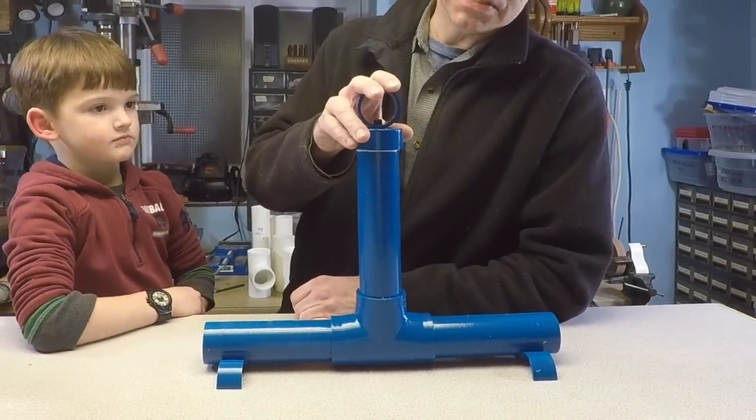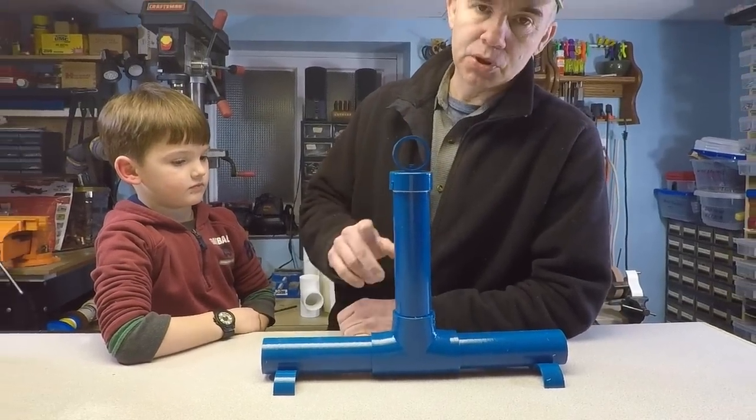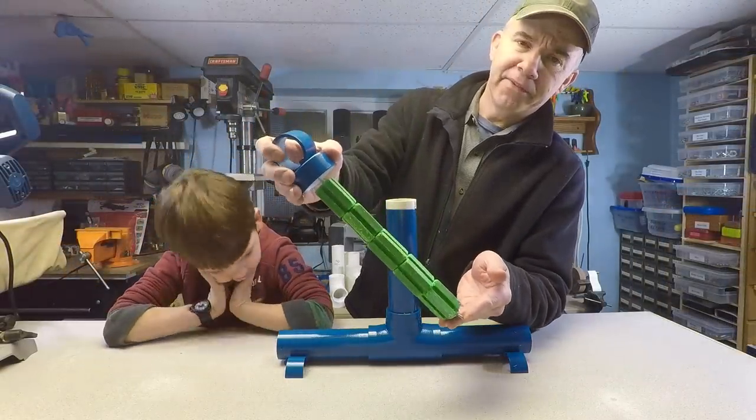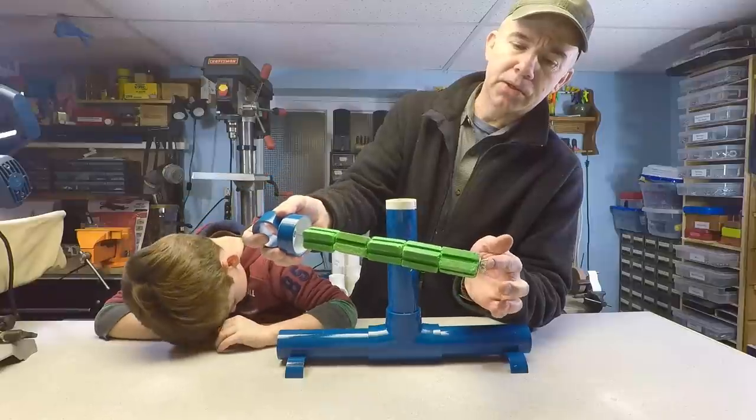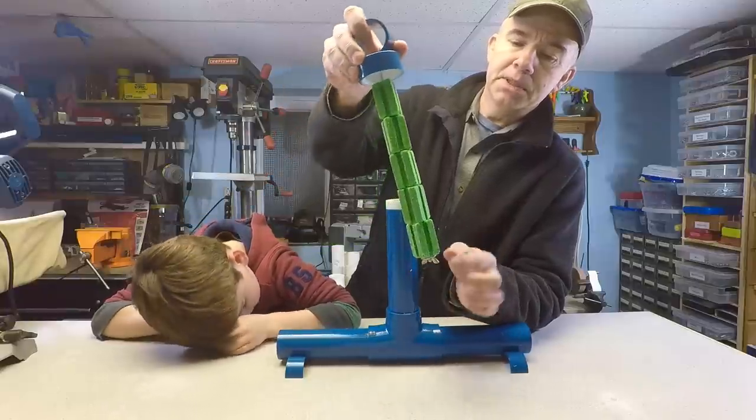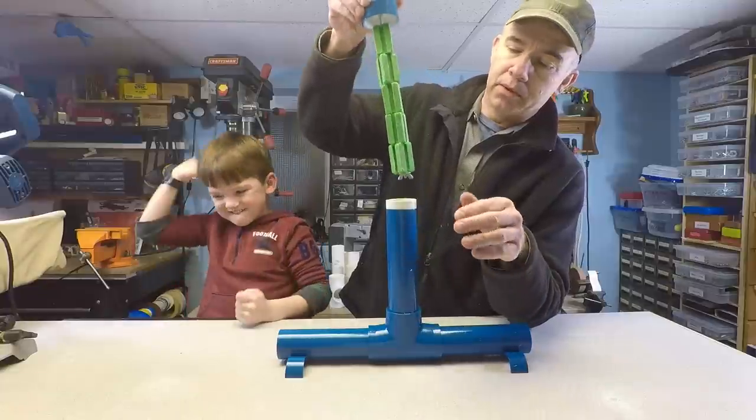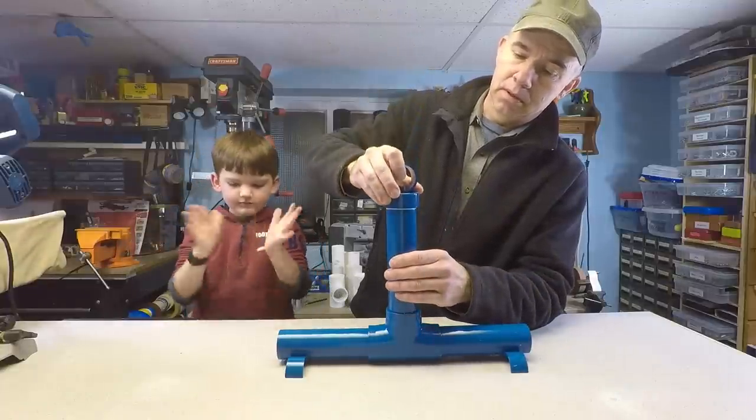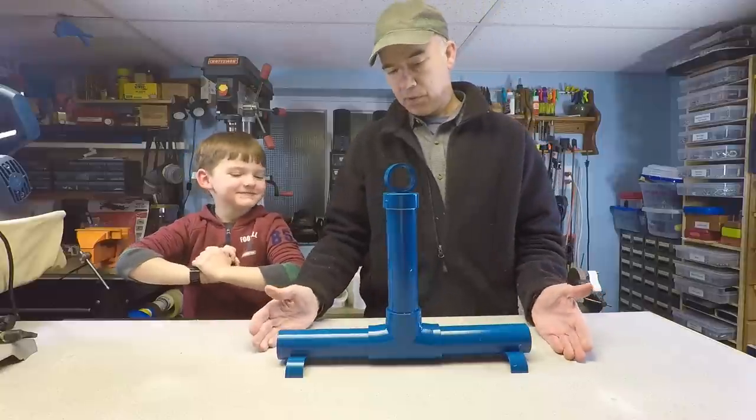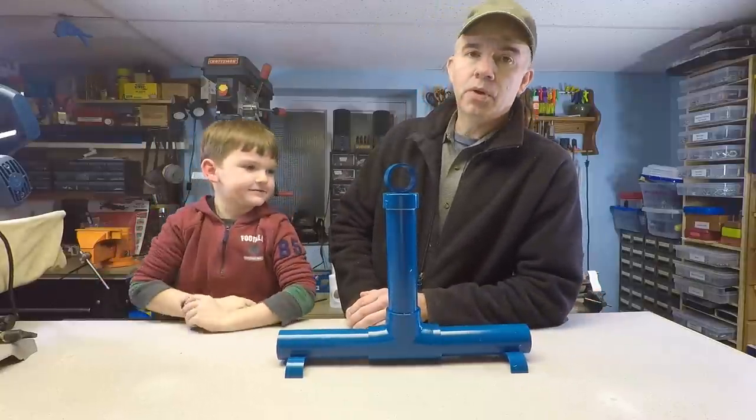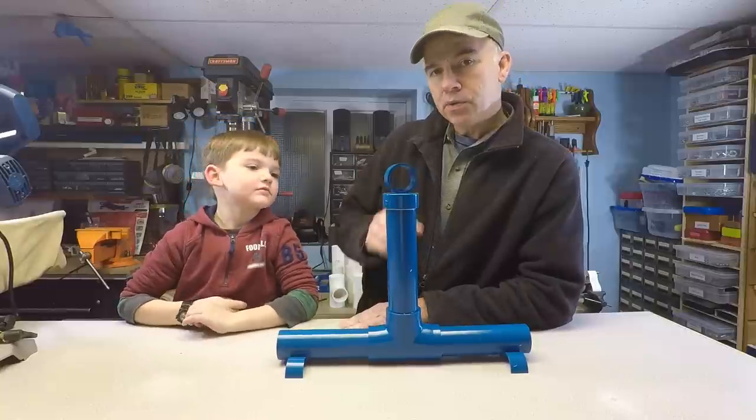So I've got here a PVC bait station. Let me show you how it works. I have five bait blocks threaded onto a metal rod. So what happens is the mice will finish eating this one and the rest will then drop down. Load it up. It works. What do you think? Pretty cool. Now I want to show you how you can make one for yourself.